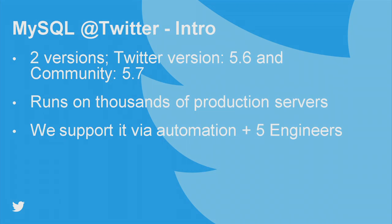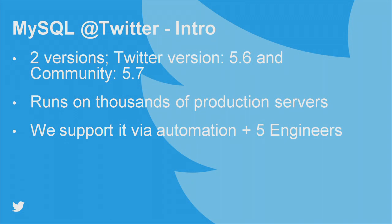So what do we have at Twitter? We currently have two versions of MySQL. The first one is 5.6 — it's our own version, our own fork of MySQL. There's been a lot of talk about it for the past two or three years, about Geysart and Flack and so on. We recently moved to community version 5.7 with the help of Oracle support, so now we have two versions: 5.6 and 5.7.